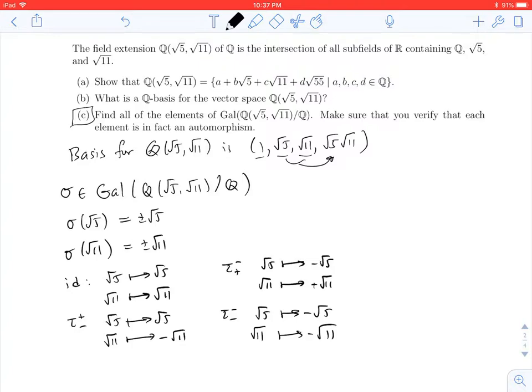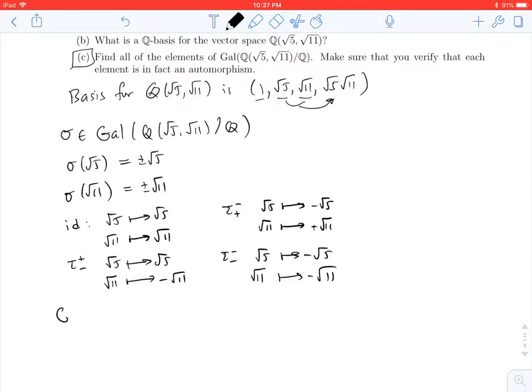So you have a group now, a Galois group. Of course, you have to verify that all four of these are automorphisms. The identity, we know for sure, but using the exact same argument that we used before, we see the other three are going to be automorphisms. So we get a Galois group that is going to have four elements in it.